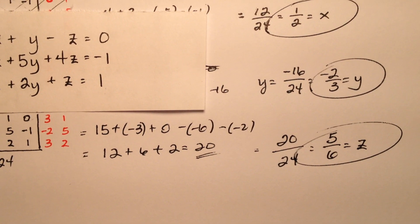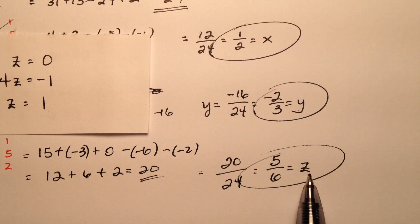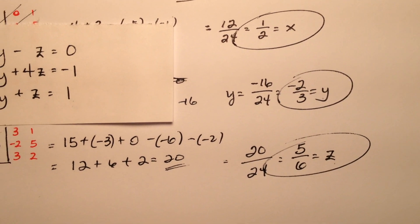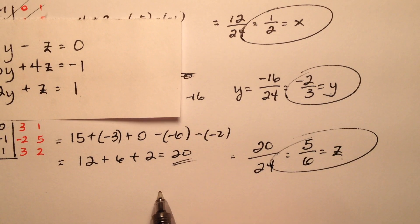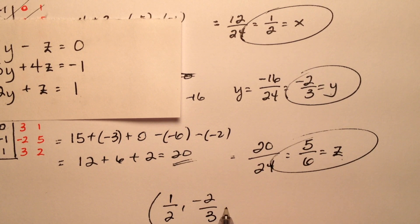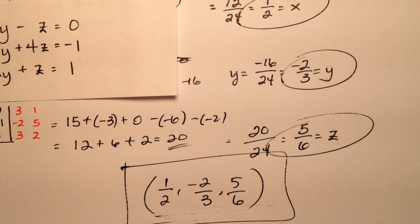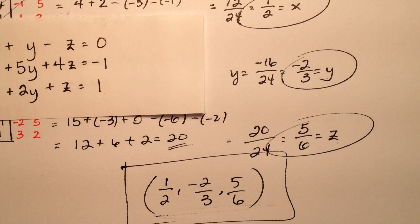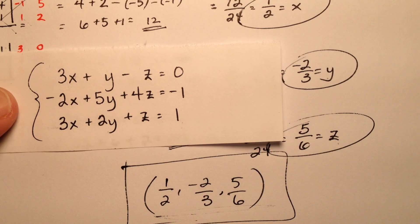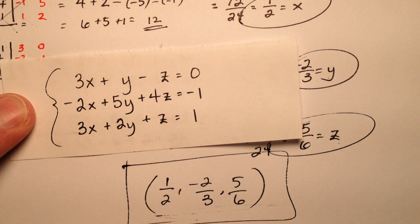Now that I have all three values, I'm going to write them as an ordered triplet with x first, then y, then z. So here is my solution for this original system of equations: (1/2, −2/3, 5/6), solved using Cramer's rule.